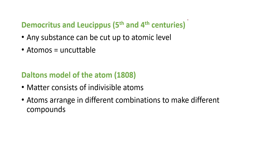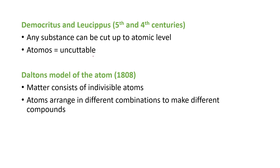The first is the Democritus and Leucippus model. They belong to the fifth and fourth centuries. According to them, any substance can be cut only up to the atomic level — it cannot be cut beyond the atomic level. They coined the term 'atomos,' meaning uncuttable. However, this model does not properly explain the structure of the atom, since we now know atoms contain subatomic particles like electrons and protons.